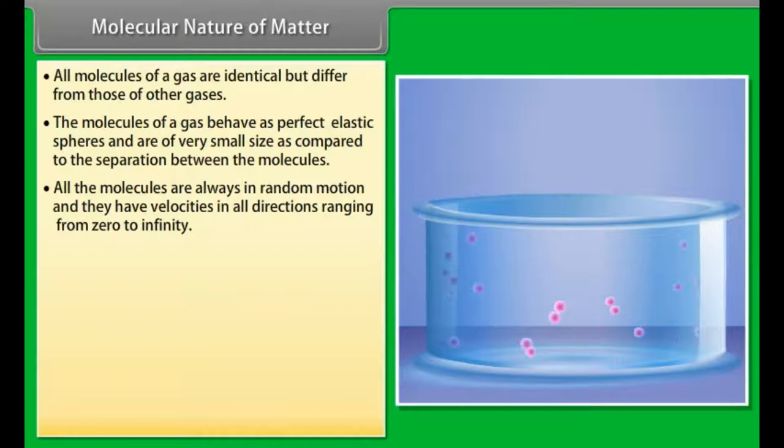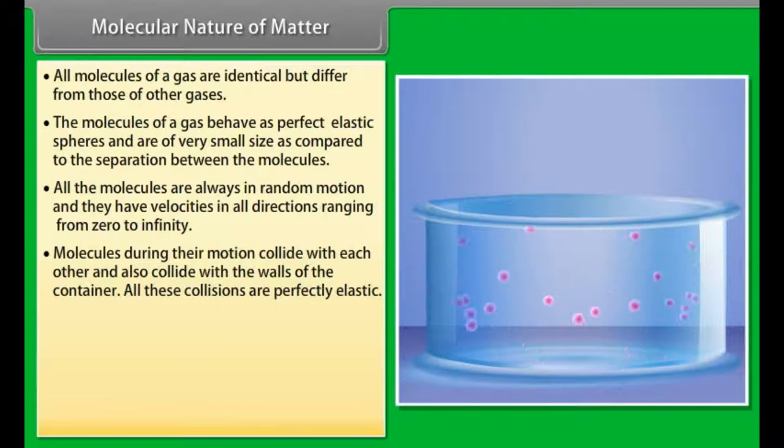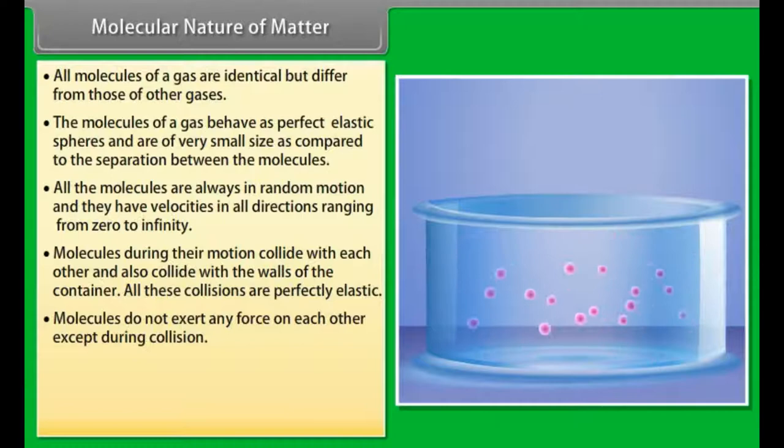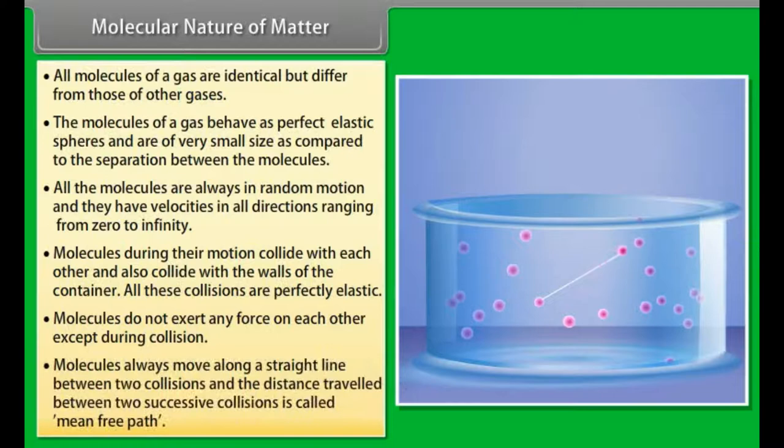Molecules during their motion collide with each other and also collide with walls of the container. All these collisions are perfectly elastic. Molecules do not exert any force on each other except during collision. Molecules always move along a straight line between two collisions, and the distance travelled between two successive collisions is called mean free path.